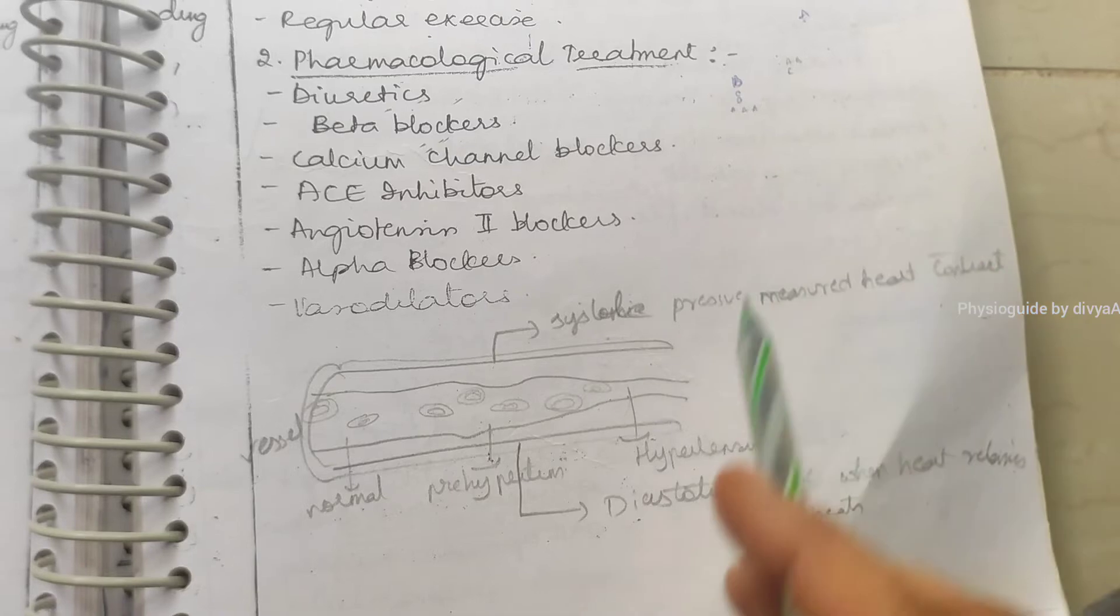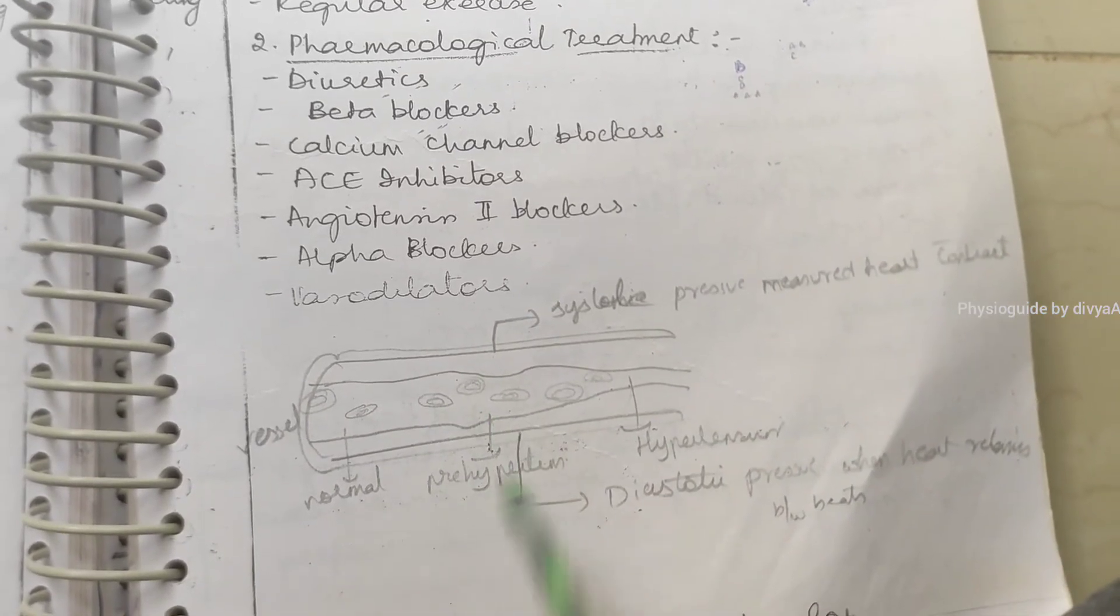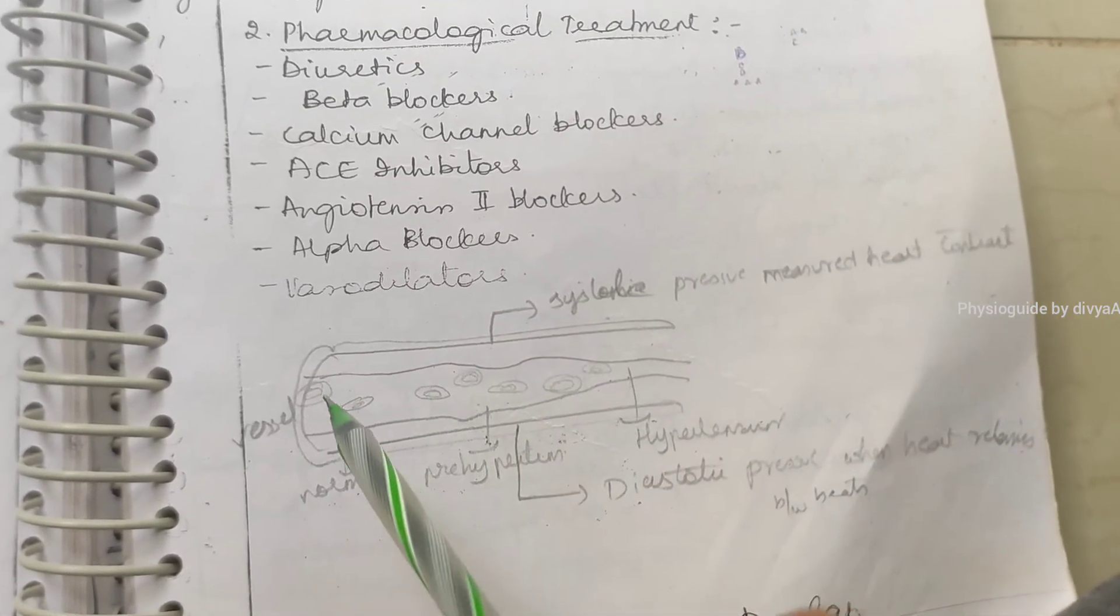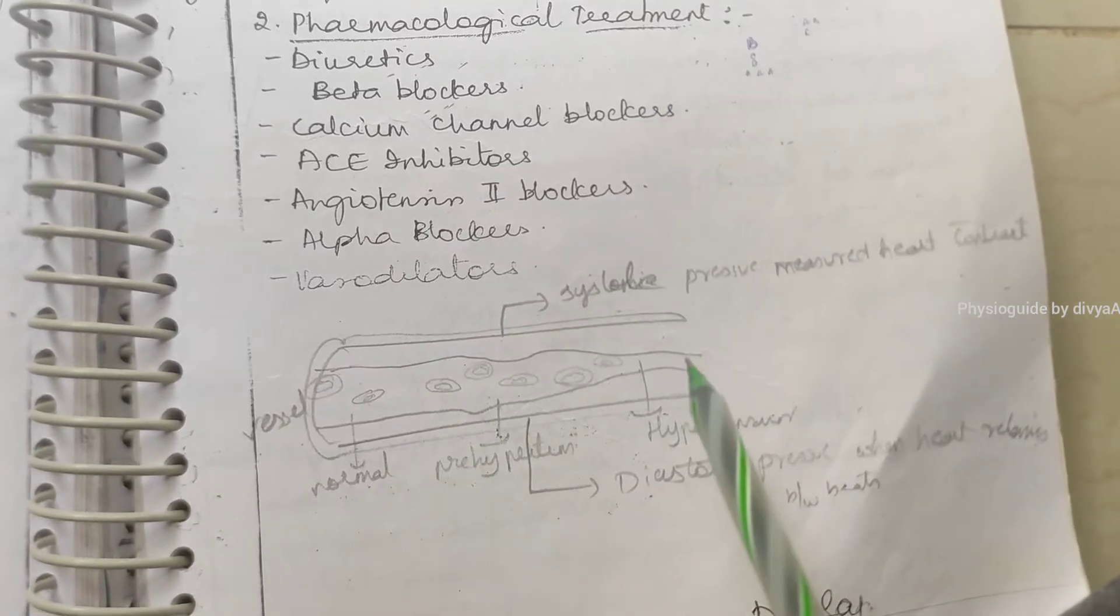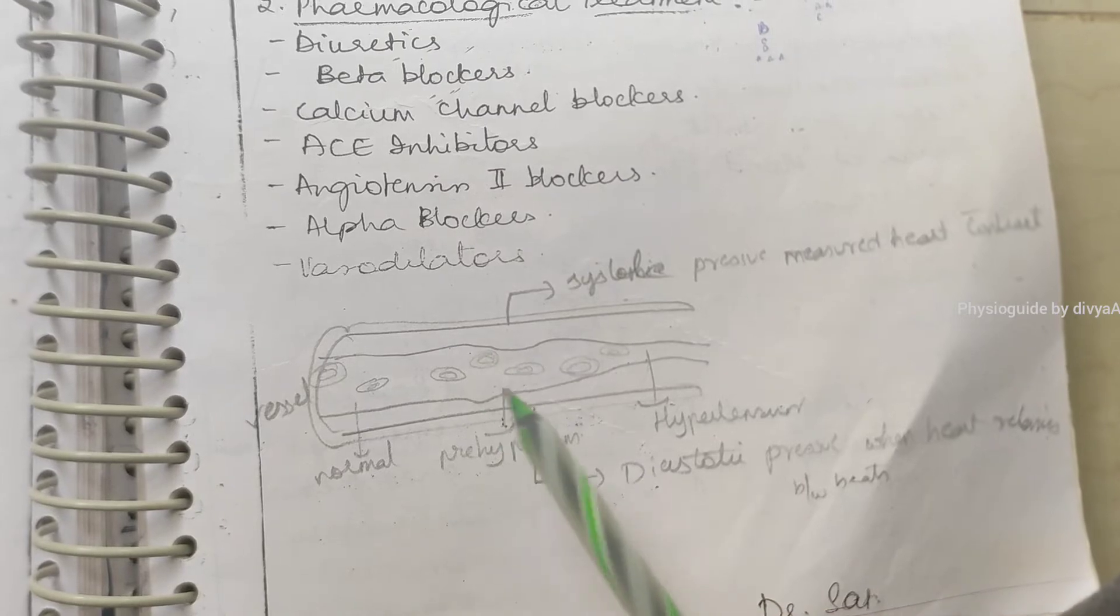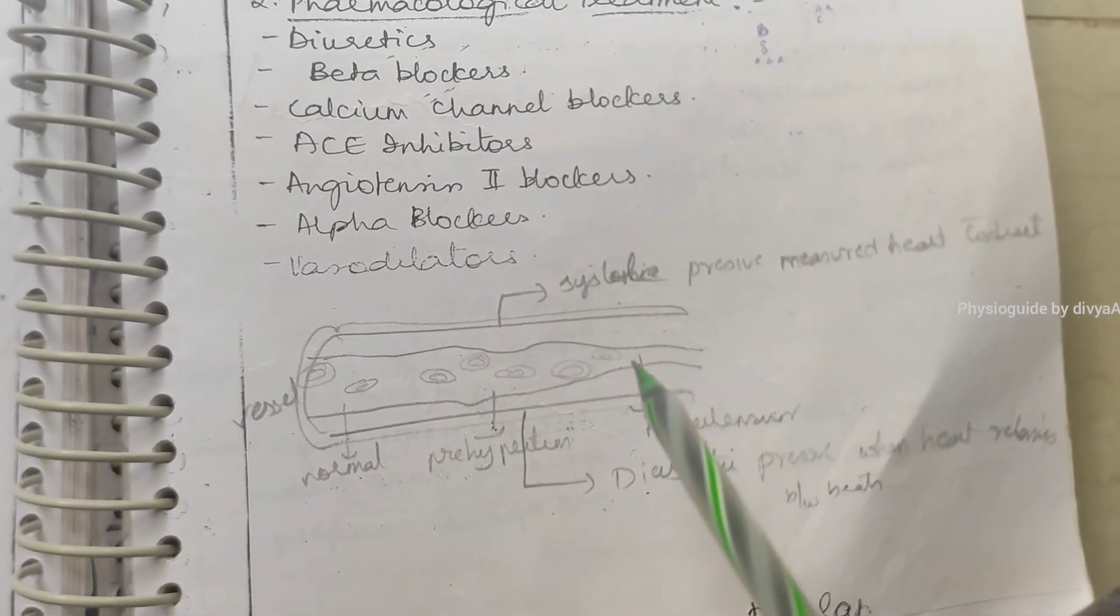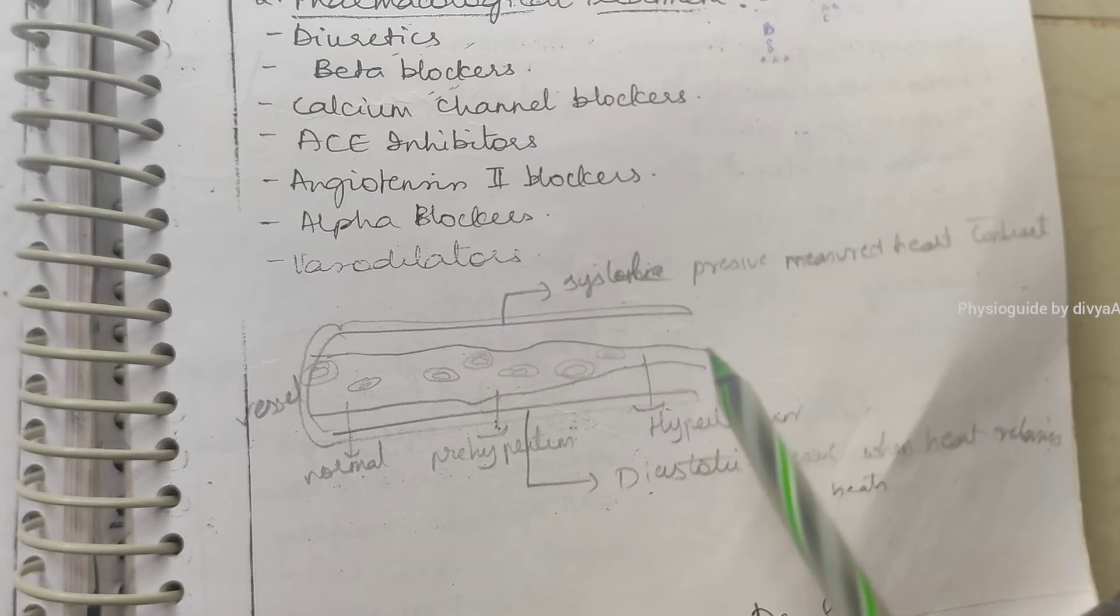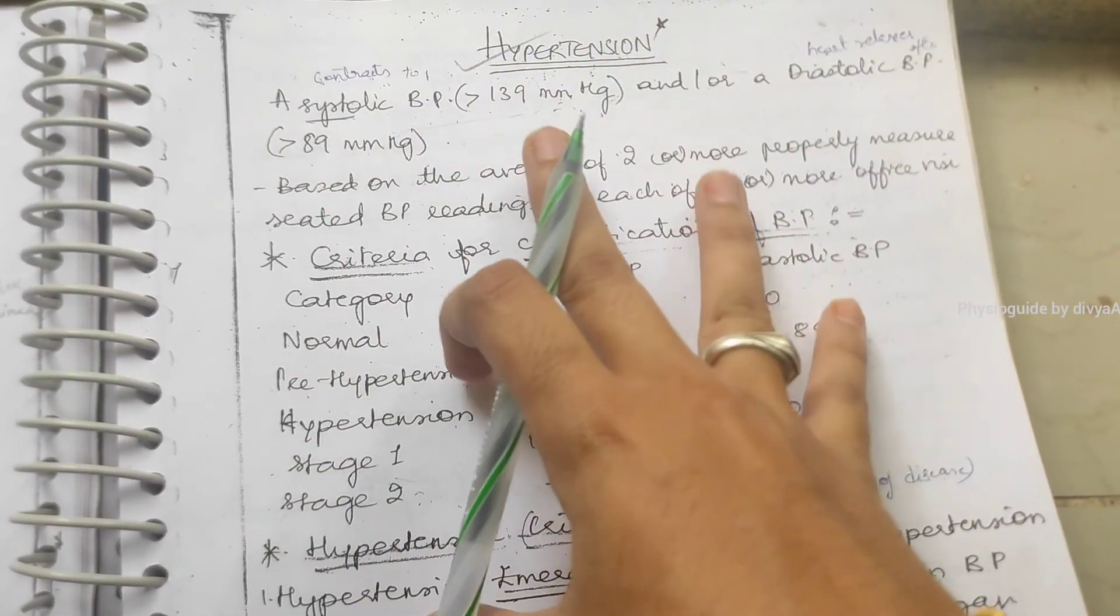See, this is a normal blood vessel. This is a pre-hypertension, see the decrease in the blood vessel. This is the hypertension severe form, seeing there is narrow blood flow.